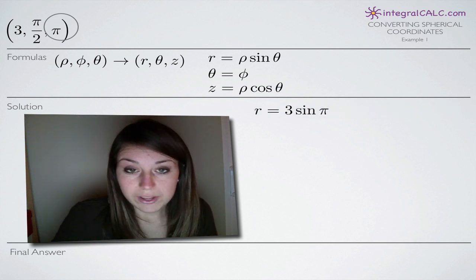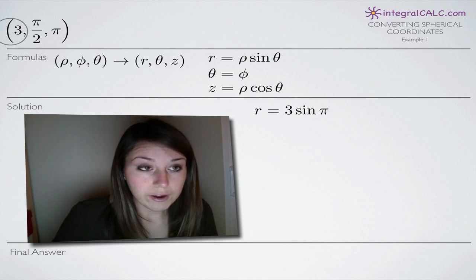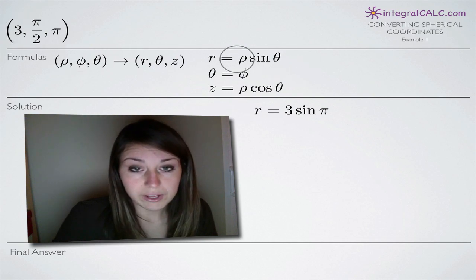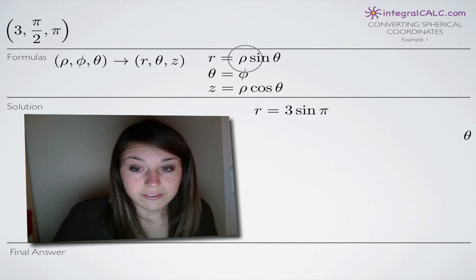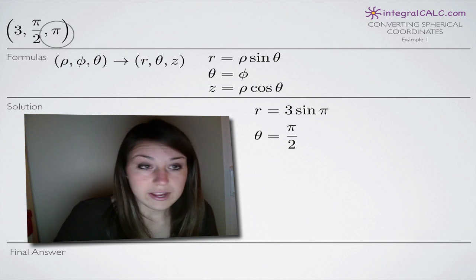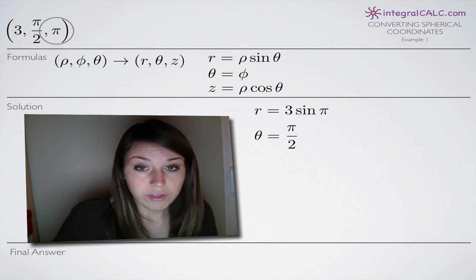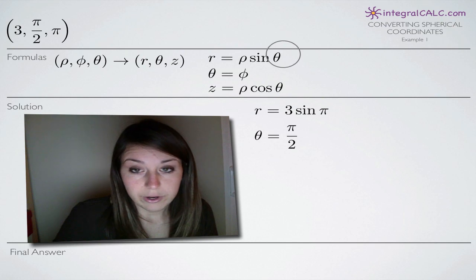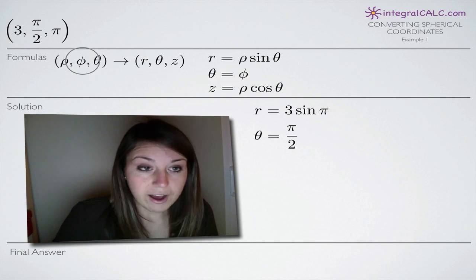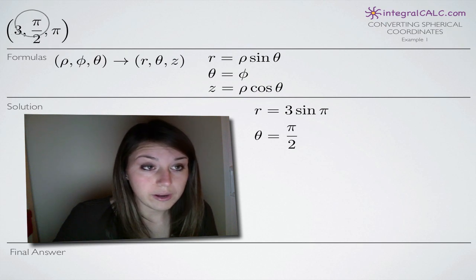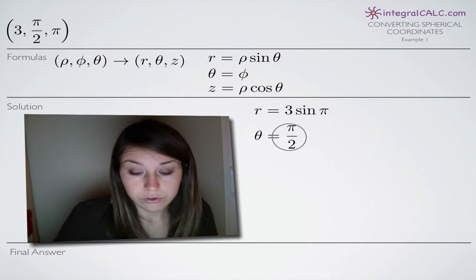So the first thing we'll do is write out our three equations. We'll take ρ, in our case 3, and plug it into our formula for r. Then we're going to take π for θ and plug it in here for θ into our equation for r. Theta, in terms of cylindrical coordinates, is going to be equal to φ in our spherical coordinates, which we'll grab from our original coordinate: π/2.